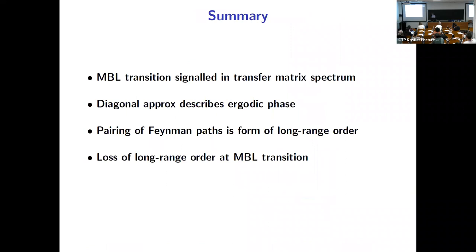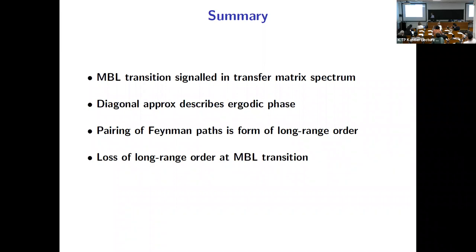The messages are: the MBL transition is signaled in this transfer matrix spectrum. The diagonal approximation — familiar in treatments of single-particle problems in disordered conductors in terms of Diffusons and Cooperons — gives a description of the ergodic phase. For a quantity such as the spectral form factor, there is freedom in the pairing of the Feynman paths within the diagonal approximation, and that pairing is a form of long-range order that disappears at the MBL transition. Thanks.